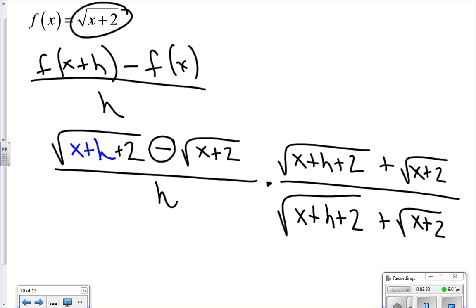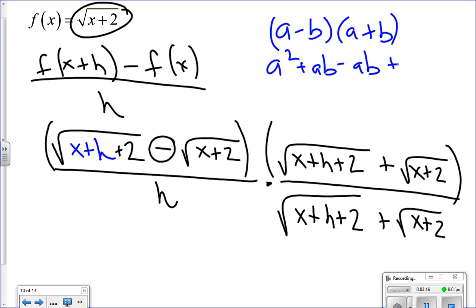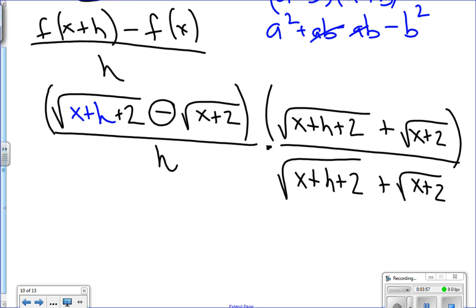Now what we're going to have here is when two conjugates multiply by one another. Let's look at it in an easier way. If I take a minus b times a plus b and FOIL, I get a squared plus ab minus ab minus b squared. The reason why you multiply by the conjugate is the inner and outer products cancel.